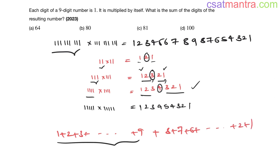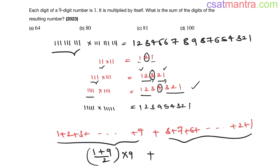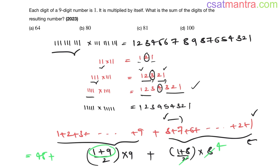We use the sum of n terms in arithmetic progression: average of first and last term multiplied by number of terms. For 1 up to 9: average is (1+9)/2 = 5, and there are 9 terms, giving 45. For 1 up to 8 on the other side: average is (1+8)/2 = 4.5, with 8 terms — but using 9 × 4 = 36. So 45 plus 36 equals 81. C is our answer.